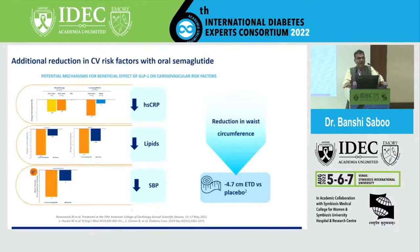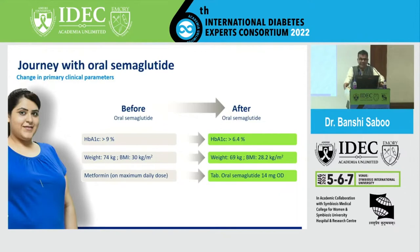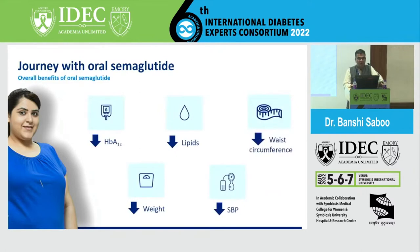The additional reduction in cardiovascular risk factors with oral semaglutide includes decrease in high-sensitive CRP, decrease in lipids, decrease in systolic blood pressure, and decrease in waist circumference — all very significant. For Varsha, started with A1c more than 9 and one year of diabetes on full dose metformin, after six months on oral semaglutide: HbA1c less than 6.4, weight 69 kg (BMI decreased to 28.2), on 14 mg full dose semaglutide plus metformin. Significant reductions in A1c, lipids, waist circumference, systolic blood pressure, and weight.